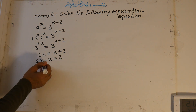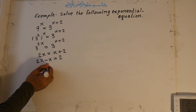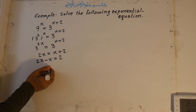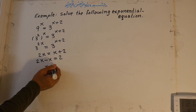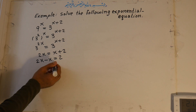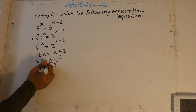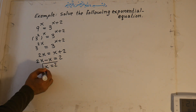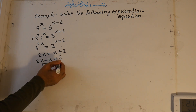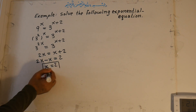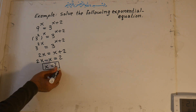We get 2x minus x equals 2, so x equals 2.